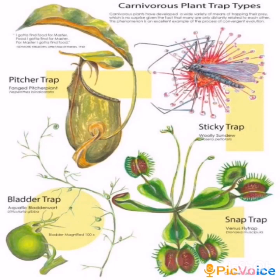The next topic is insectivorous plants. Have you seen or heard of plants that can eat animals? There are a few plants which can trap insects and digest them — these are called insectivorous plants. For example, the pitcher plant, Venus flytrap, and sundew.